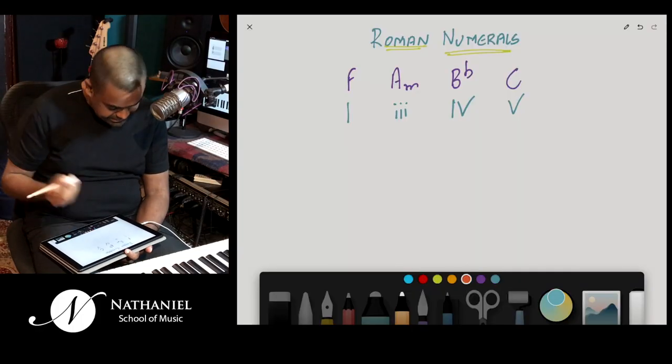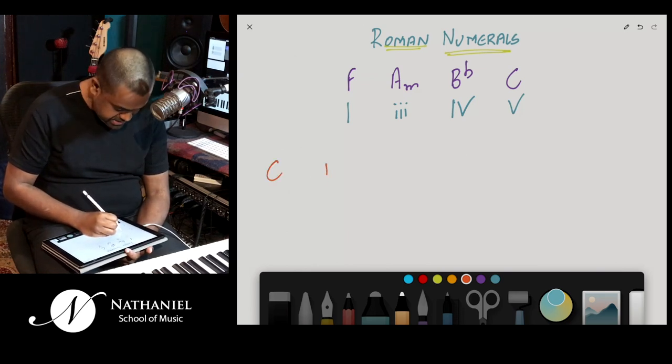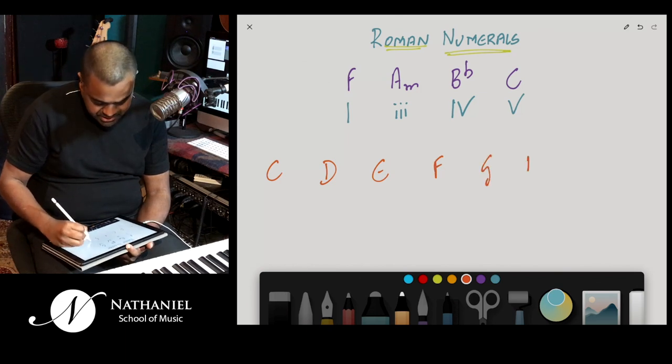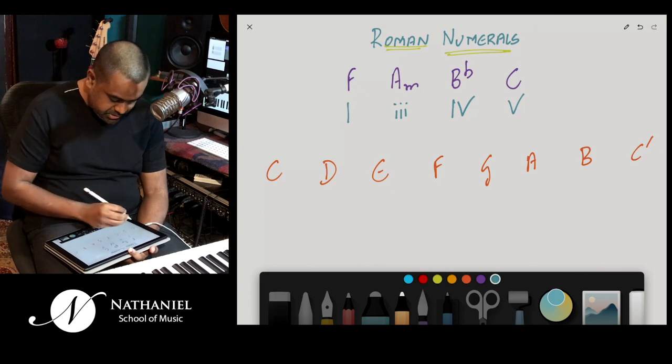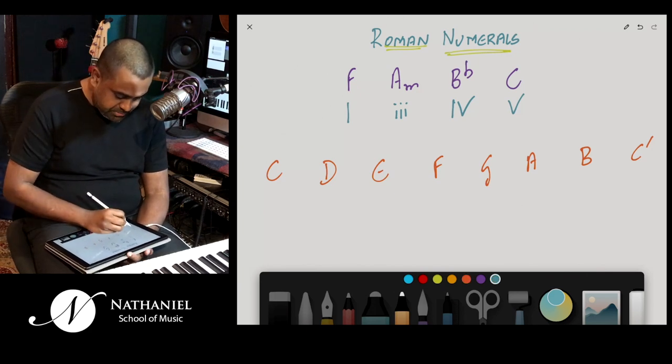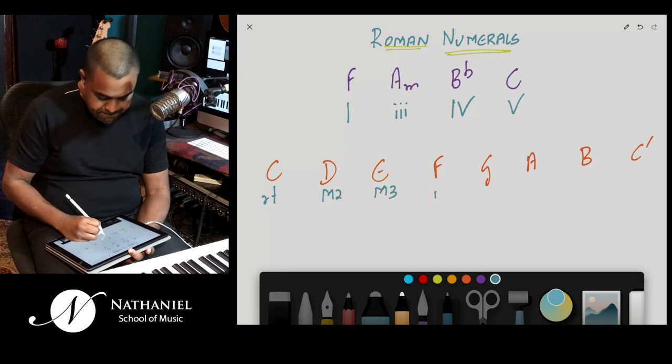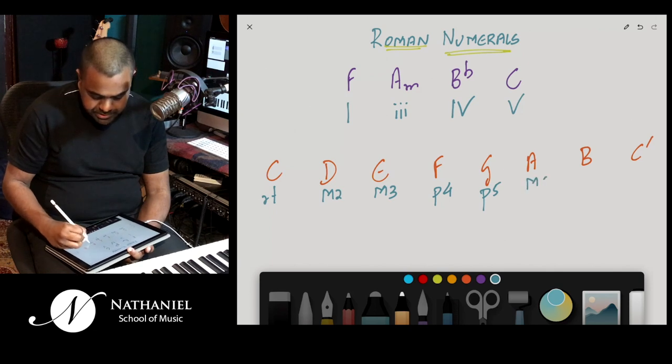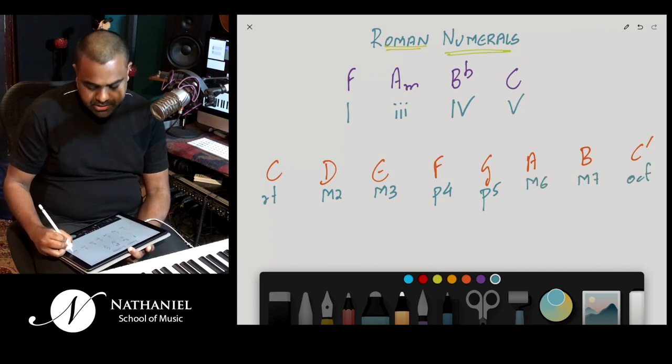So before we get started with Roman numerals, I just wanted to give you a quick overview of the major scale and all its intervals and then the other intervals as well, which are not part of the major scale. Then we will use that information to move forward with Roman numerals. So first off, if I take a major scale, like let's say C major, everyone's favorite, I guess: C, D, E, F, G, A, B, and then the high C. The first thing you'll note is these are all your major intervals. You have the root, major second, major third, perfect fourth, perfect fifth, major sixth, major seventh, and of course the octave.